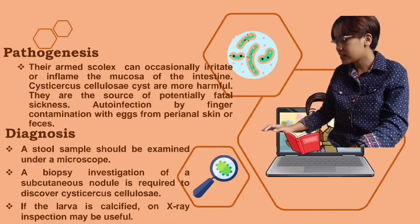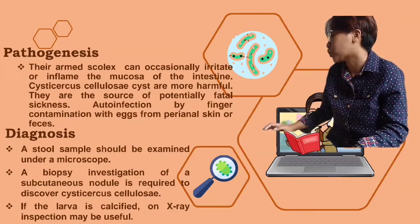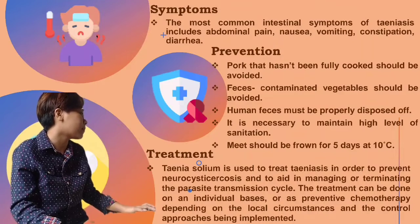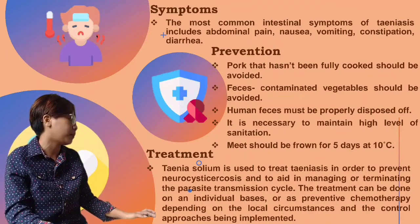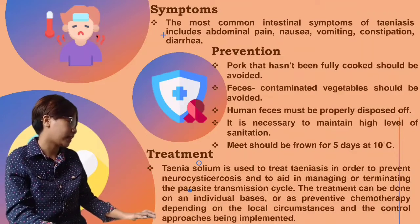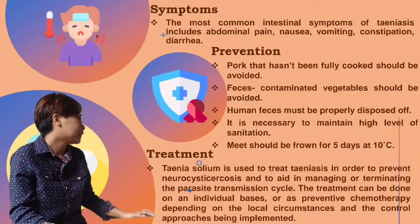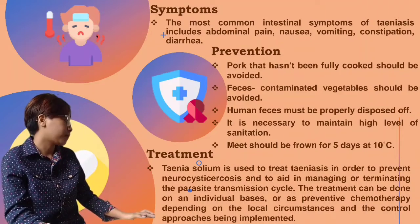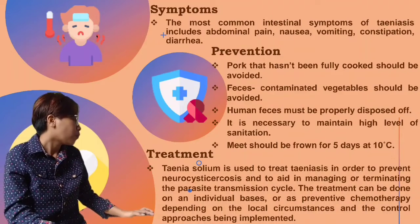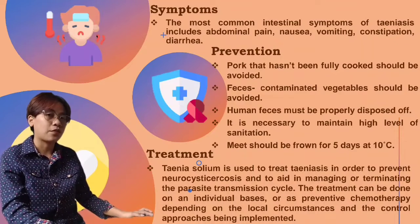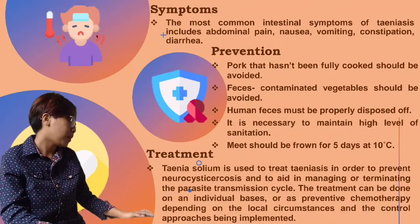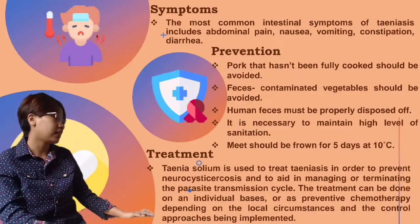If the larva is calcified, an X-ray inspection may be useful. For the symptoms, the most common intestinal symptoms of taeniasis include abdominal pain, nausea, vomiting, constipation, and diarrhea. For the prevention, pork that hasn't been fully cooked should be avoided. Vegetables contaminated with feces should be avoided. Human feces must be properly disposed of. It is necessary to maintain a high level of sanitation, and meat should be frozen for 5 days at 10 degrees Celsius.